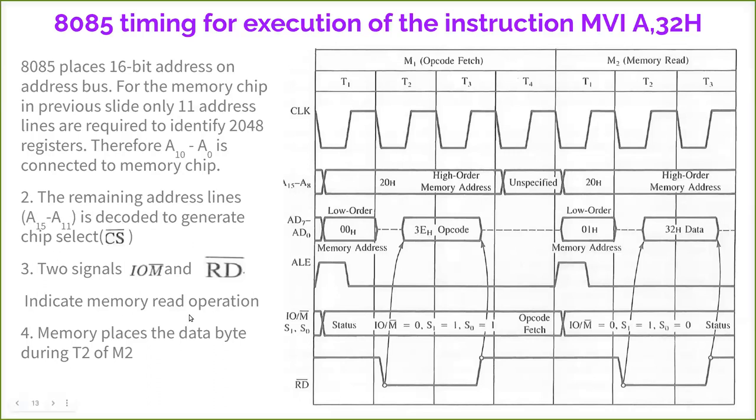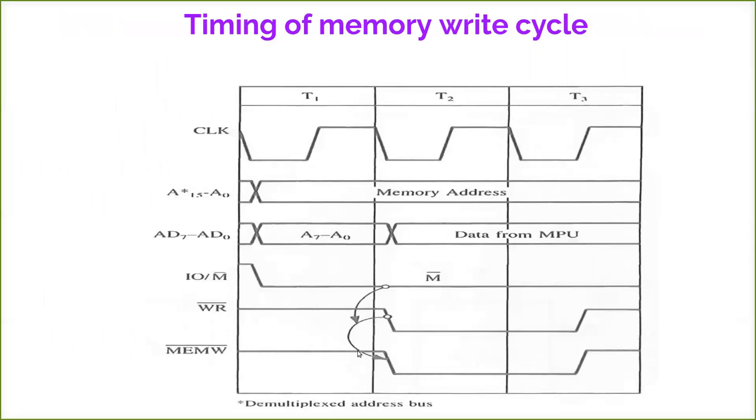The two signals IO/M bar and RD bar indicates the memory read operation. Memory places the data by T2 of M2. While writing, write signal, when it is writing to memory, same view. This is the second memory cycle M2 for writing. Here at T2 only, the data from the data bus is placed on T2 from the microprocessor because it is a write signal. Write is to write into the memory. From the microprocessor the data comes and that will be placed on the T2 cycle of this M2. At that time, IO/M bar goes low indicating that it is a memory related operation, and then WR bar also goes low indicating now you can write, and together they generate MEMW bar.